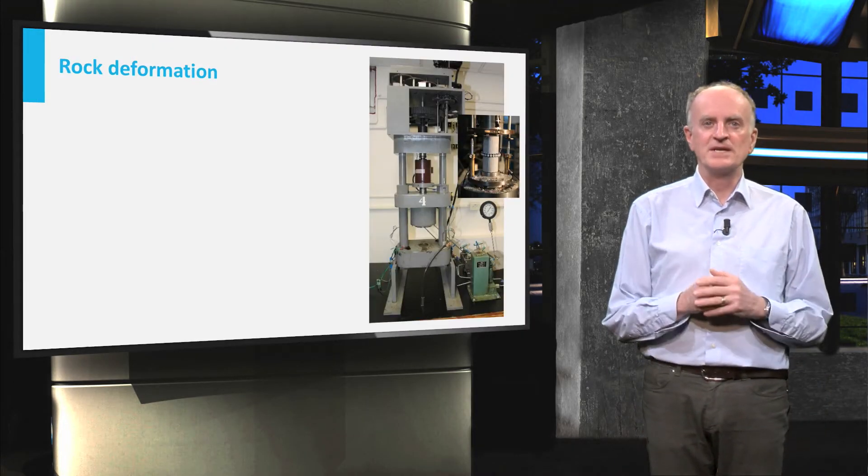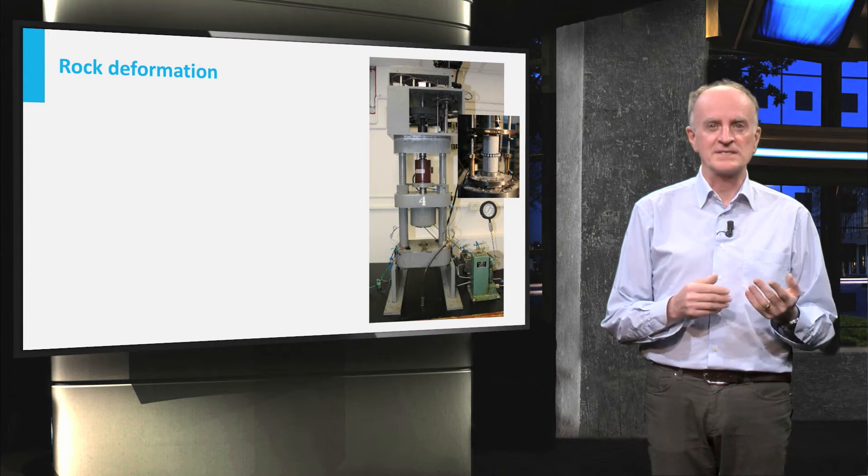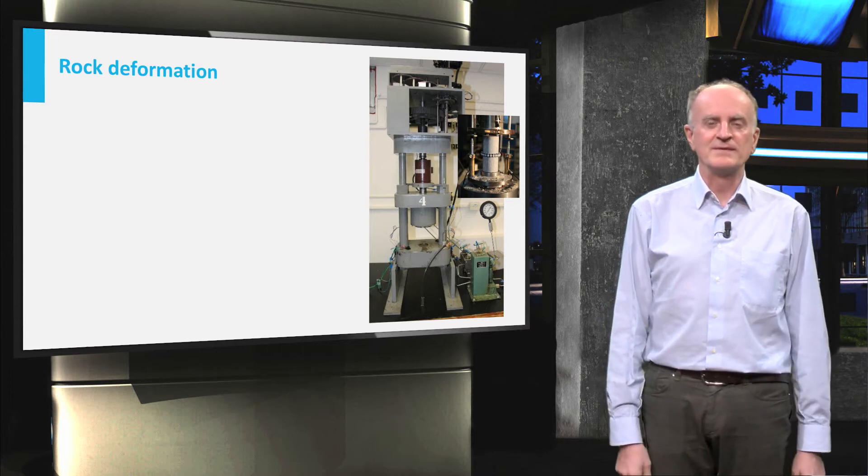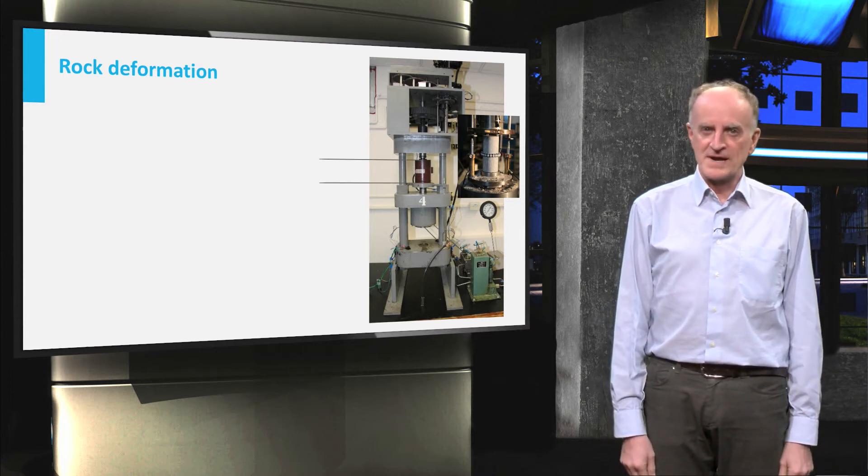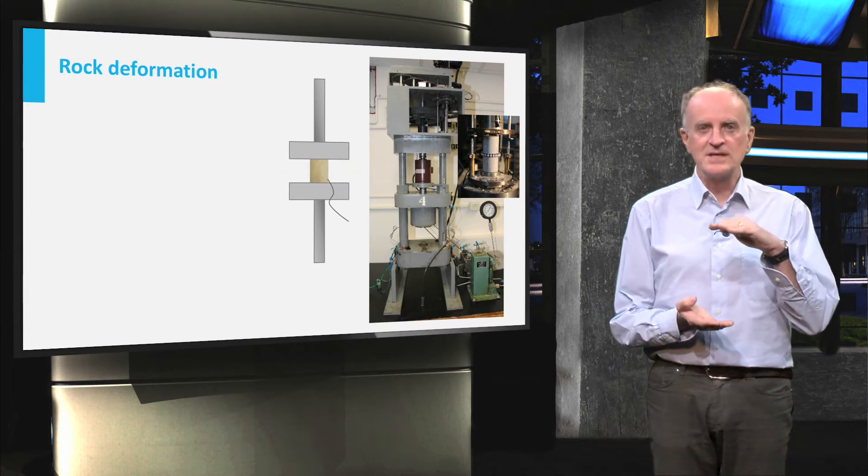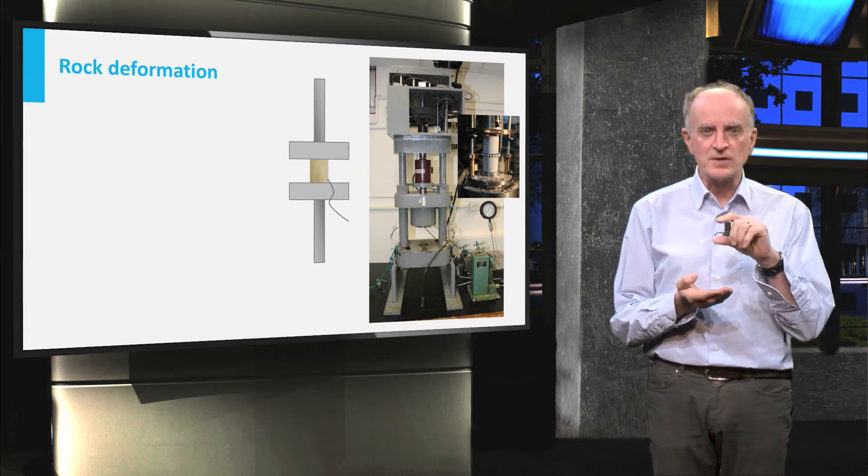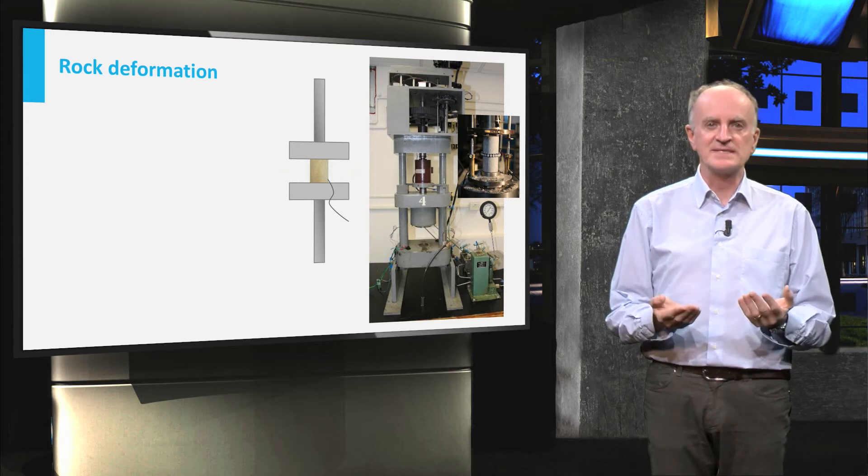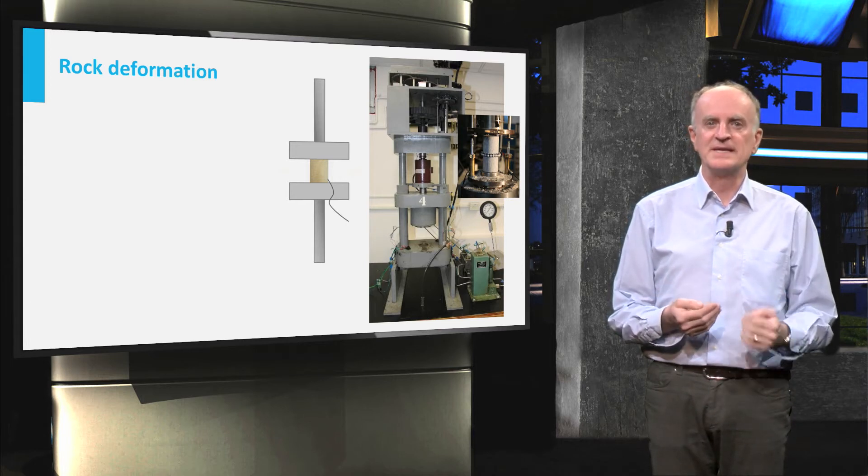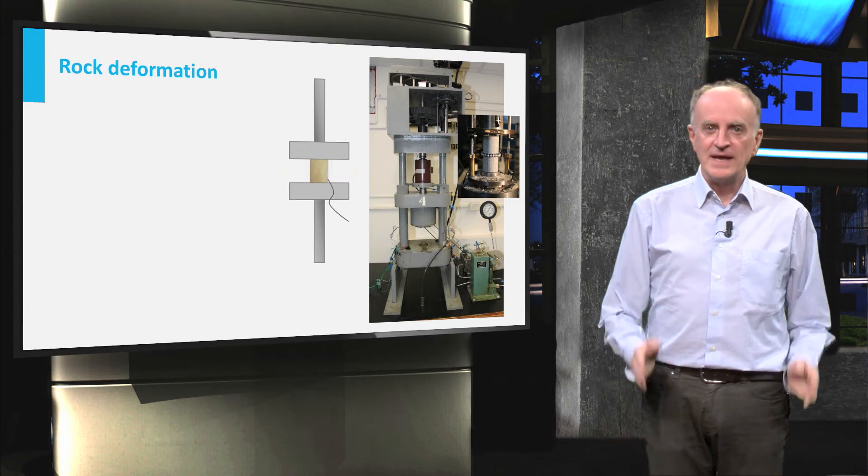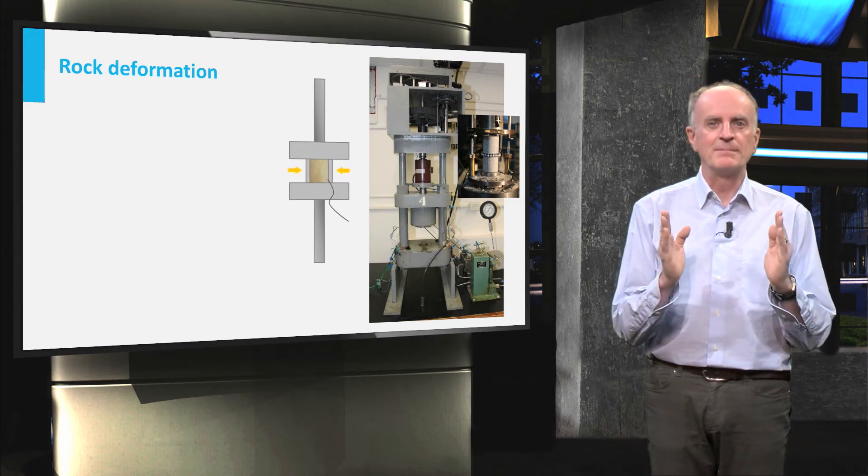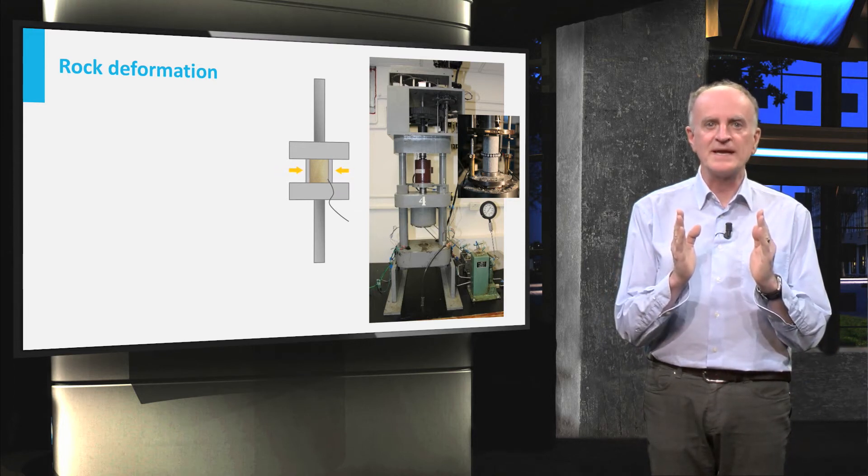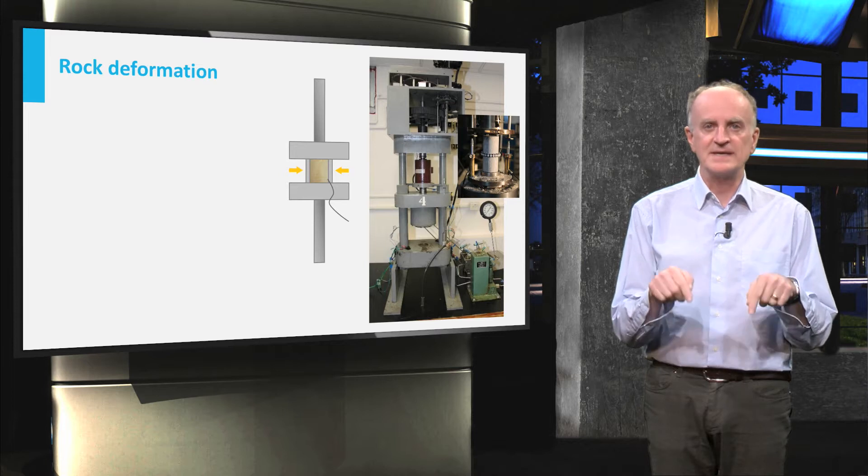The machine you see in the picture is a rock deformation press, similar to the one we have in Delft. The apparatus consists of two pistons which move towards each other, squeezing the rock, and an electric resistance to perform experiments at different temperatures. A confining pressure can be applied around the sample to replicate conditions at different depths in the earth.